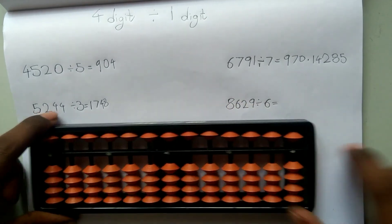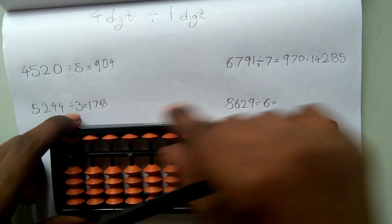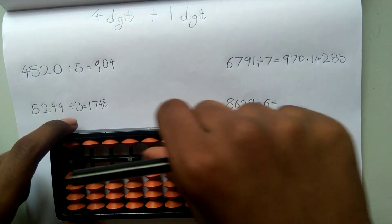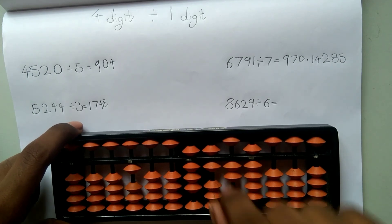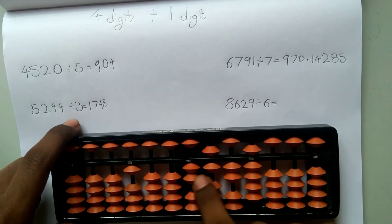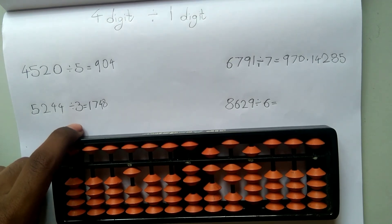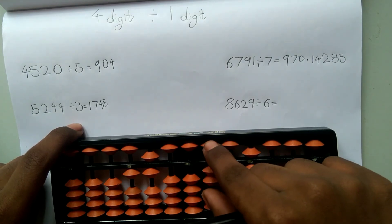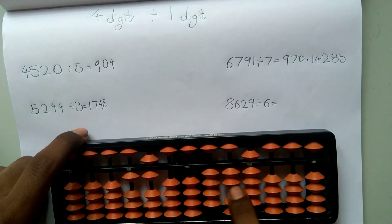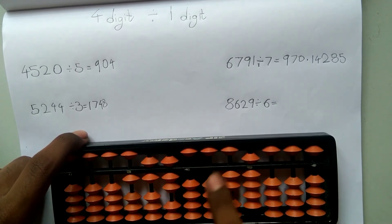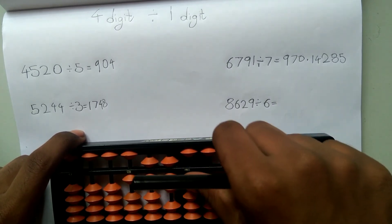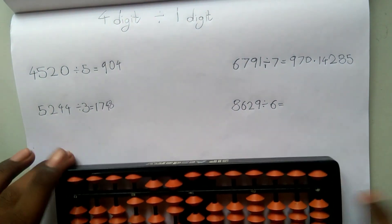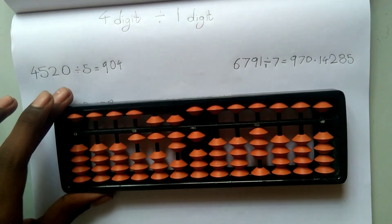Now let me do the next problem: 8629 divided by 6. First, represent 8629 on the question set. 8 is greater than 6, so I use it. 6 ones are 6, and I subtract 6. Include the next digit — it becomes 26. 6 sixes are 24. Now it's 42. 6 sevens are 42. And I have 9. 6 ones are 6, and I subtract 6. So I have a remainder of 3. Let me write the answer: 1471.